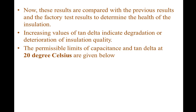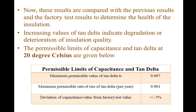The permissible limits of capacitance and tan delta at 20 degrees Celsius are: maximum permissible value of tan delta is 0.007; maximum permissible rate of rise of tan delta per year is 0.001; and the deviation of capacitance value from factory test value should be within plus or minus 5%.